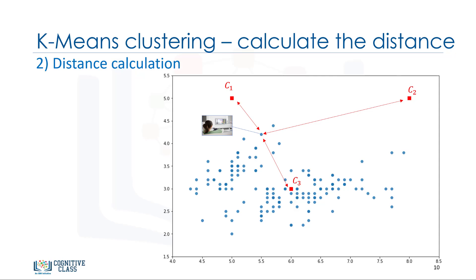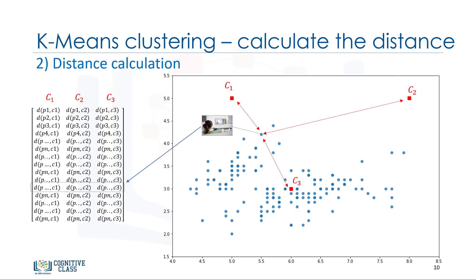As mentioned before, depending on the nature of the data and the purpose for which clustering is being used, different measures of distance may be used to place items into clusters. Therefore, you will form a matrix where each row represents the distance of a customer from each centroid. It is called the distance matrix.